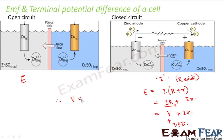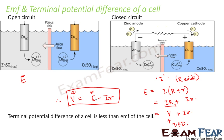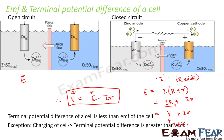We denote terminal potential difference by V and EMF by E. This is the relationship between terminal potential difference and EMF. Terminal potential difference is always less than EMF, and how much less depends on the value of the internal resistance. Terminal potential difference of a cell is less than EMF of the cell — but there is an exception: during the charging of a cell, terminal potential difference is greater than EMF. To know about it in detail, you can refer to the videos on current electricity.